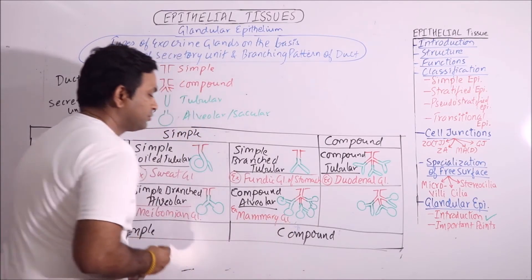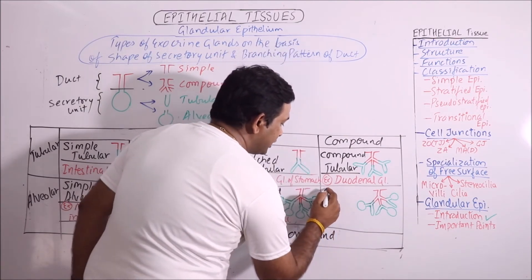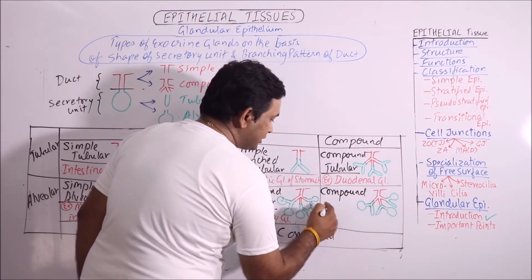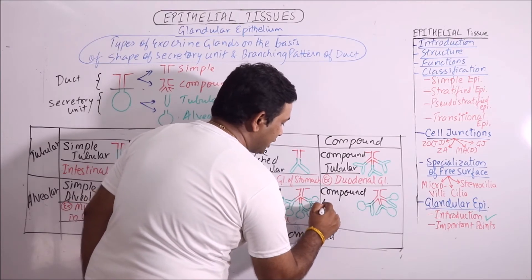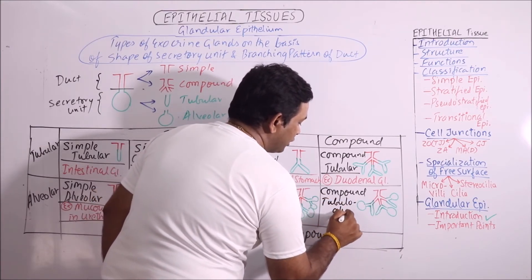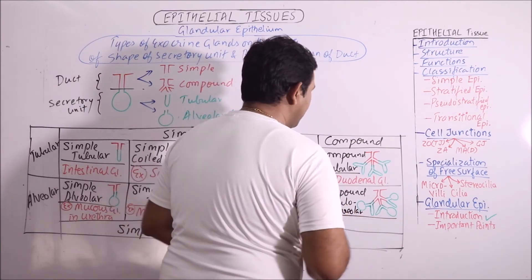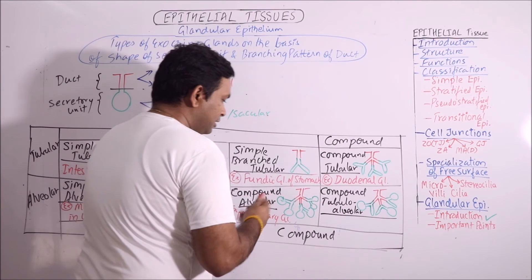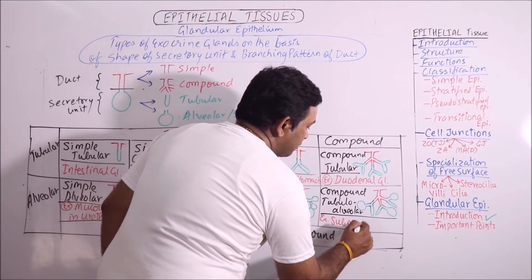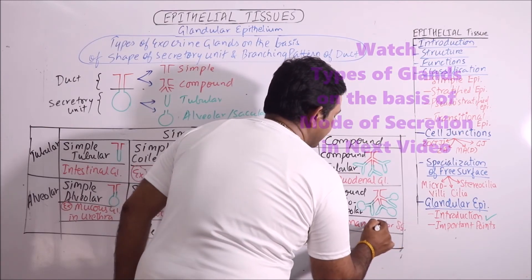The examples of compound alveolar glands are mammary glands. While here the duct system is compound and the secretory units are said to be tubulo-alveolar, so the gland is compound tubulo-alveolar. The example is the submandibular salivary gland.